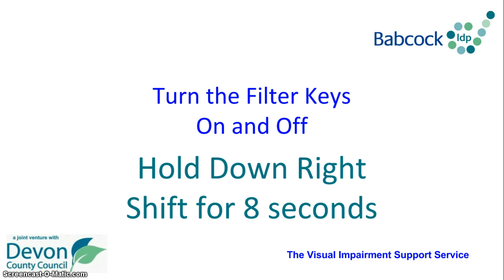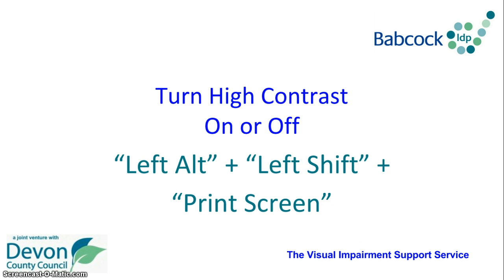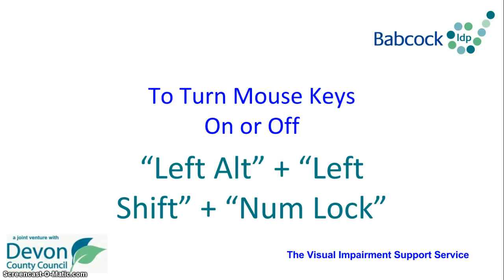To turn the Filter Keys on and off, you hold down the right Shift for 8 seconds. To turn the High Contrast on and off, you press the Left Alt key, the Left Shift key and the Print Screen key all together. To turn your Mouse Keys on and off, it is your Left Shift key all together.